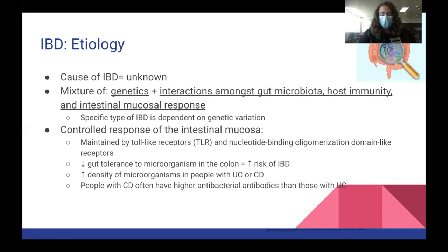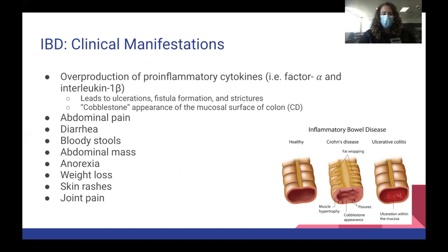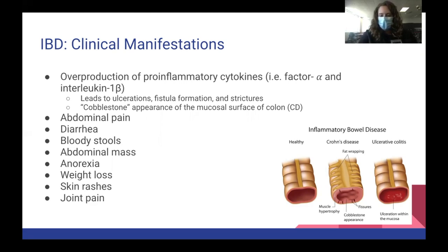Clinical manifestations include overproduction of pro-inflammatory cytokines, leading to ulcerations, fistula formations, and strictures. In Crohn's disease, we often see a cobblestone appearance of the mucosal lining of the colon. Patients may present with abdominal pain, diarrhea, bloody stools, abdominal masses, anorexia, weight loss, skin rashes, and joint pain. The appearance of the colon looks different between Crohn's disease and ulcerative colitis.